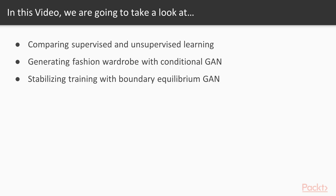In this video, we are going to compare supervised and unsupervised learning. We will then see Generating a Fashion Wardrobe with Conditional GAN. We will also see Stabilizing Training with Boundary Equilibrium GAN.